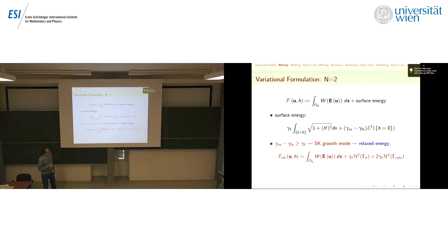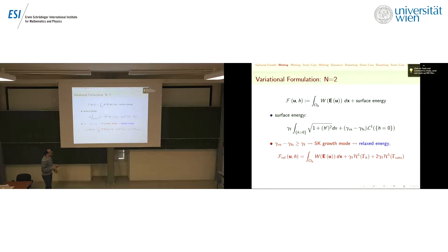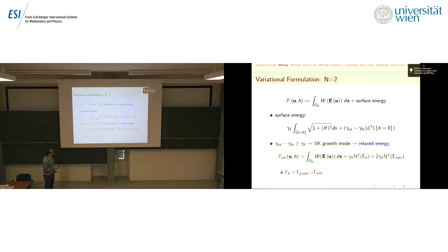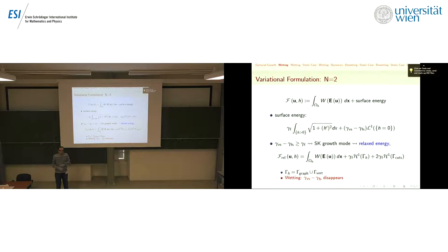In this situation you consider the effective energy — the relaxed energy. What you can prove is that the relaxed energy takes the following form. The main change is that this constant disappears. You only have gamma_f — the surface energy of the film. This is why this is called wetting: in a minimizing sequence it is much better to put a very thin layer of film, covering the entire region. You don't leave any portion of the substrate exposed.